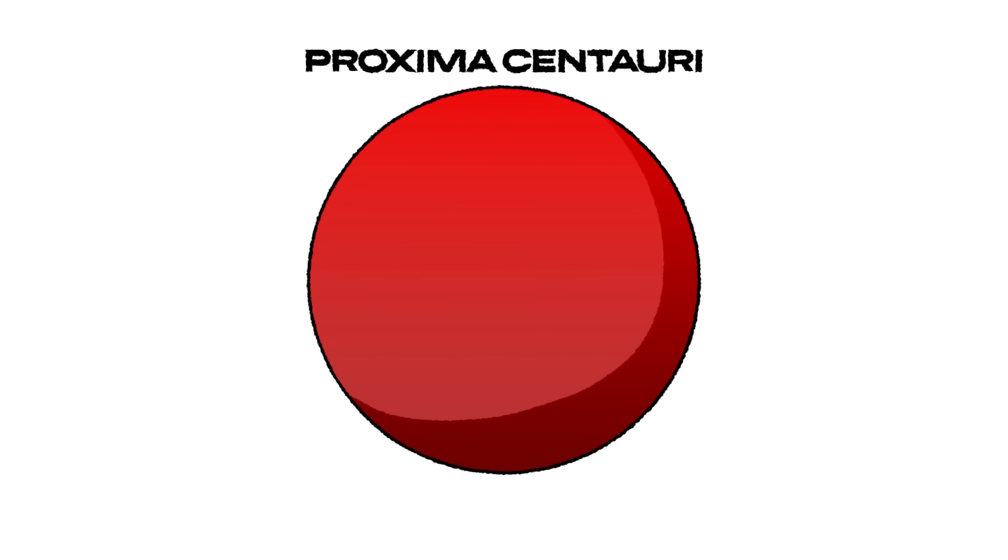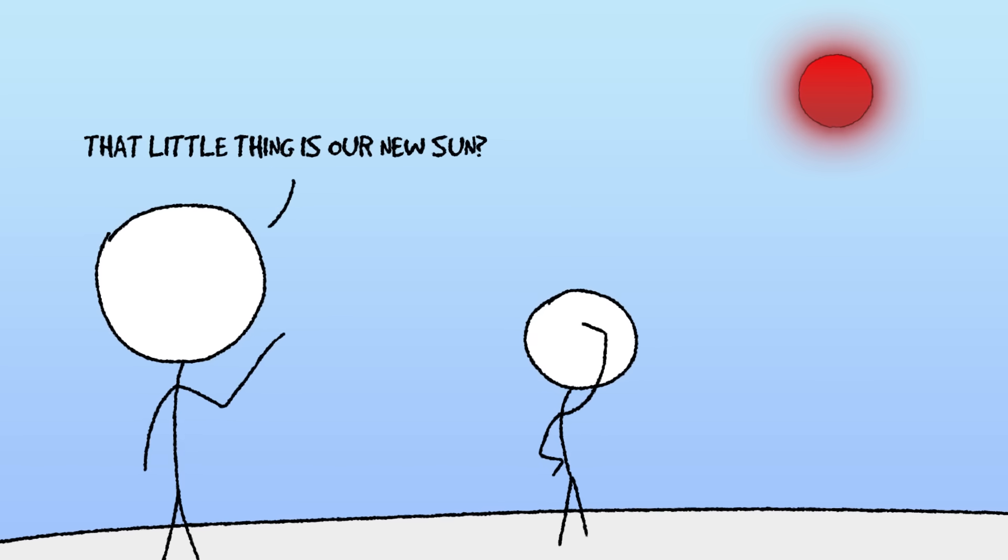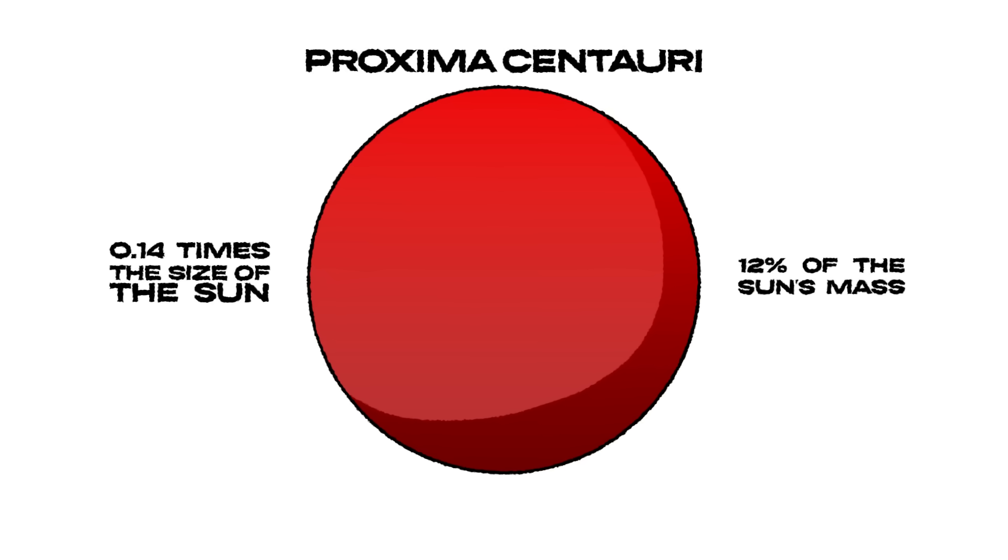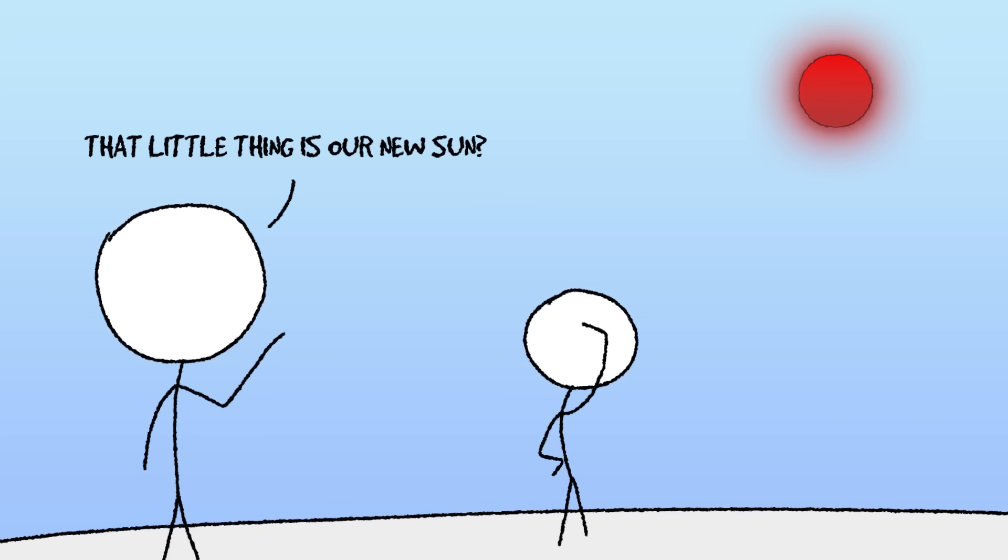Our first contender is Proxima Centauri, the closest star to our sun. It's a red dwarf, meaning it's small, dim, and relatively cool. At only 0.14 times the size of the sun, this star wouldn't exactly command a small presence in our sky. Its mass is just 12% of the sun's, meaning its gravitational pull would be much weaker. And with a surface temperature of just 3,000 degrees Celsius, this star is barely warm enough to keep Earth from freezing solid.